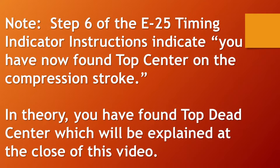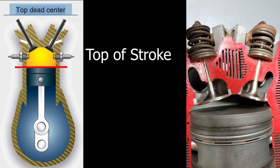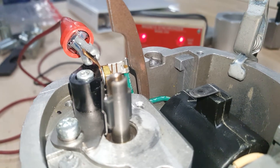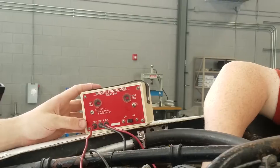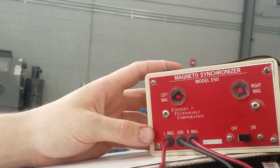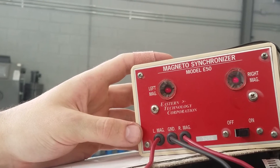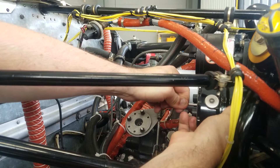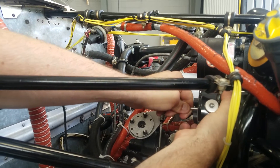The E25 instruction states top center when in theory you are at top dead center, which will be explained at the end of this video. The engine is also configured at this point to allow timing of the magneto to the number one cylinder. The breaker points for the magneto should just be starting to open at this setting. Breaker point openings should be checked using the model E50 synchronizer. Magneto and engine timing after finding top dead center will be discussed in a video called 'Timing the Magneto to the Engine.'